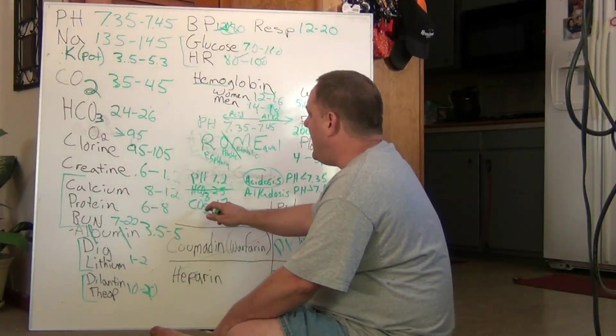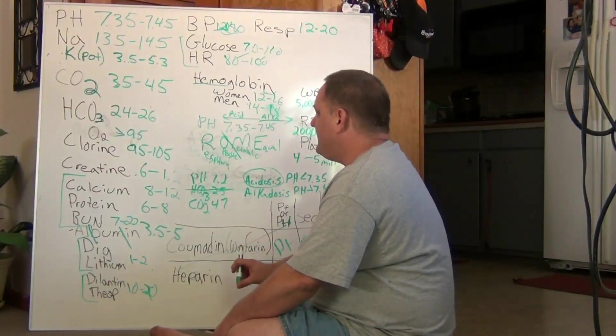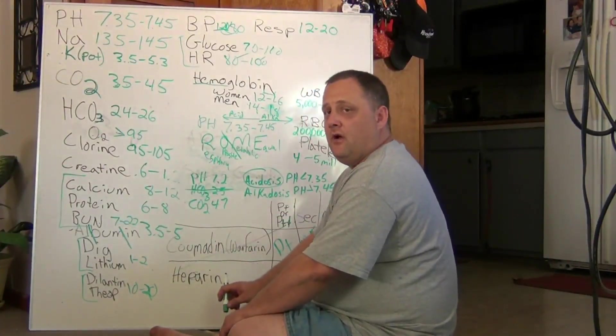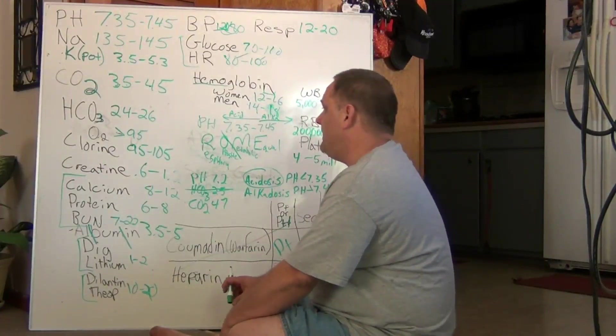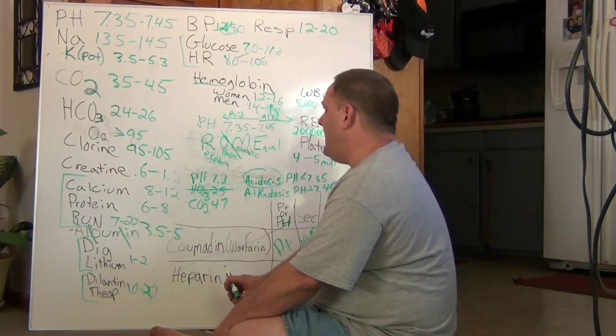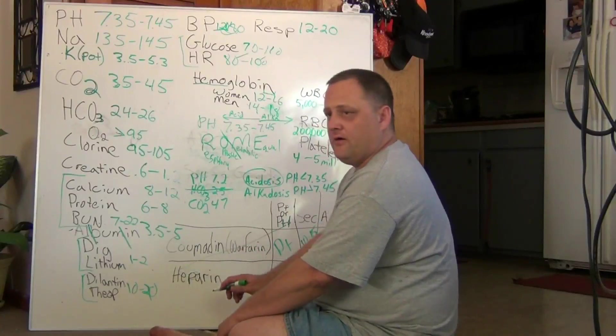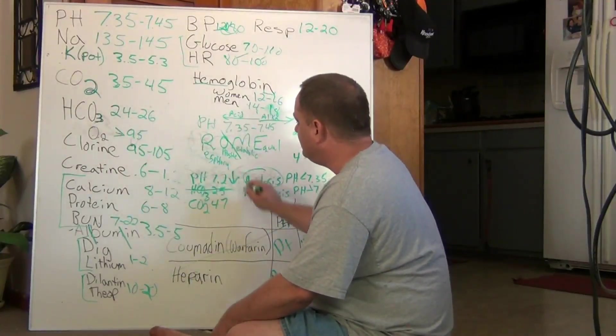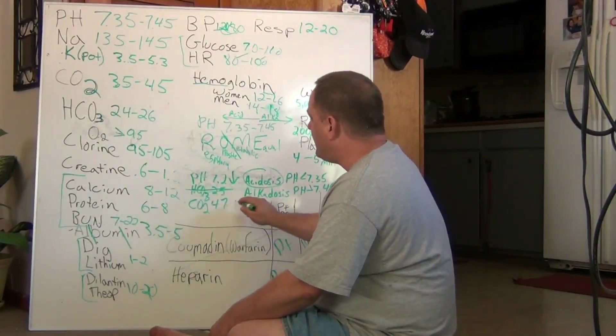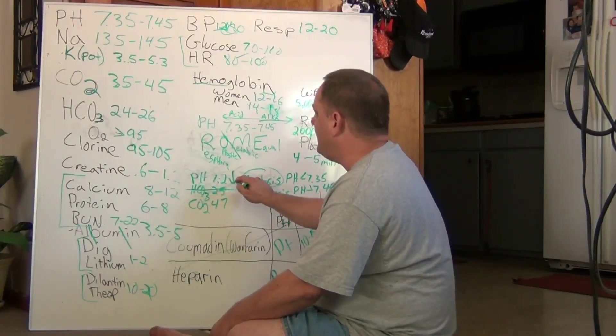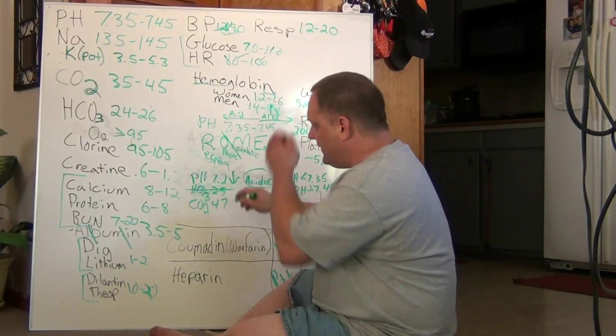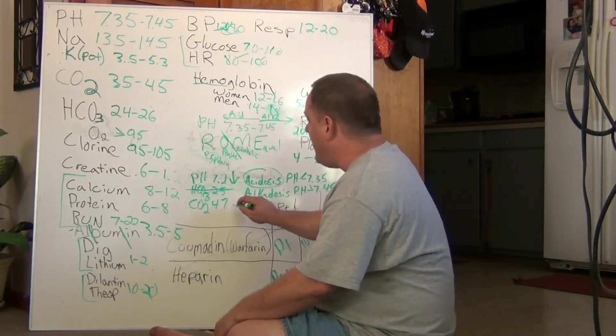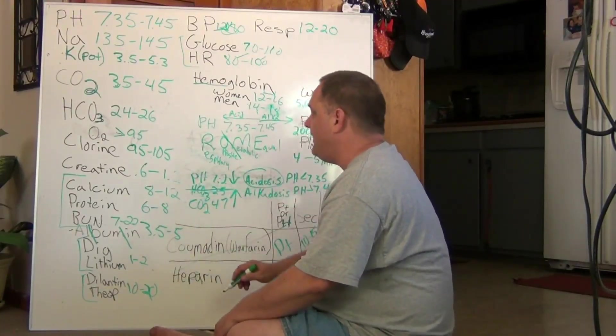Is the carbon dioxide value within the normal range? No, it is not. Is it greater or less than the normal range? Well, it's greater. So, we have a pH that's less, and we have a carbon dioxide. The pH that's less than the standard normal value range. The carbon dioxide is greater than the normal value range.